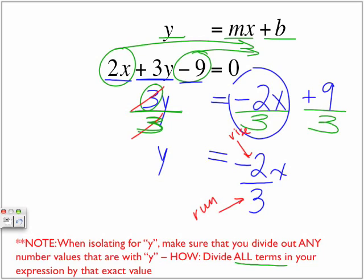And over here, positive 9 divided by 3 is going to leave me with positive 3. So 9 divided by 3 will just leave me with 3.